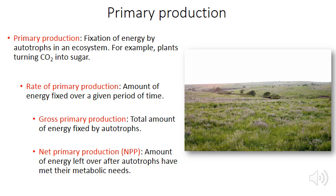Plants may absorb a certain amount of energy from the sun, but much of that energy and the carbon they fix is used to fuel photosynthesis and cellular respiration, and yet more energy is lost as heat. After all those processes, only a certain amount of energy is left over, stored in plant tissues. From a practical standpoint, only a certain proportion of energy absorbed by plants is available for consumption by the next trophic level.